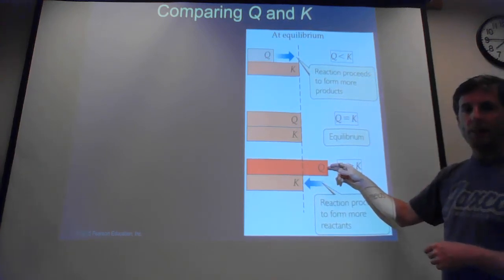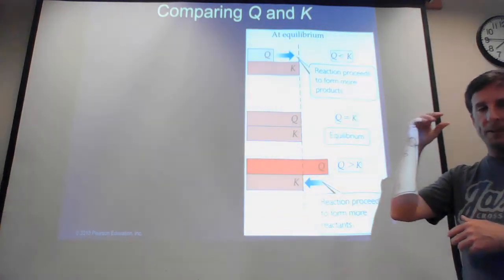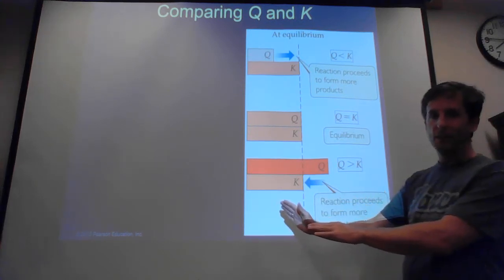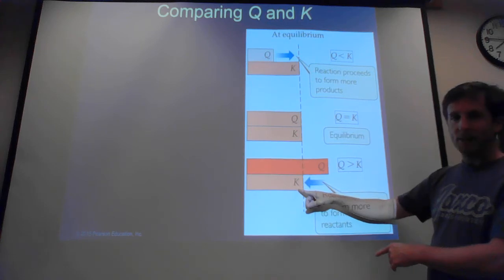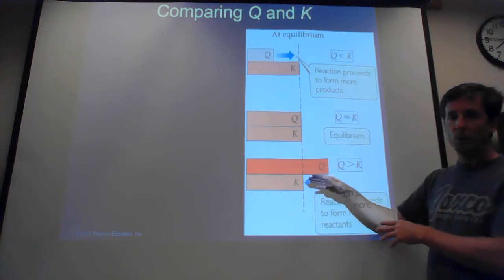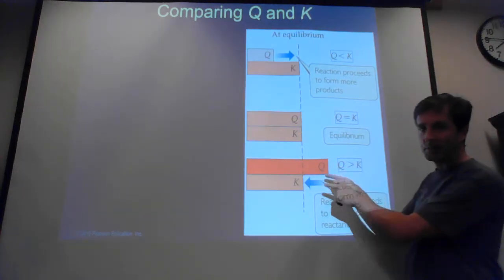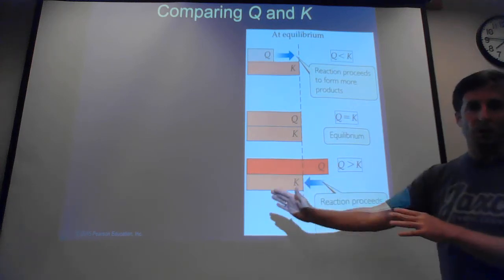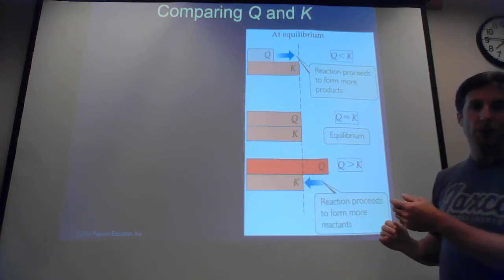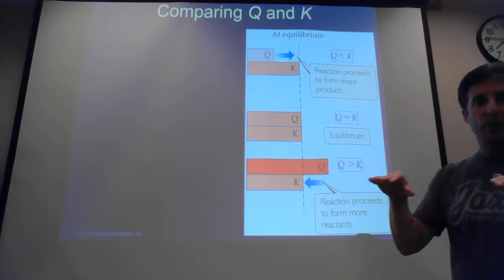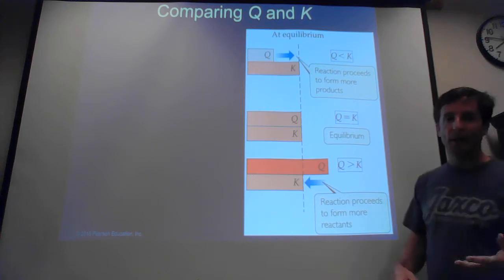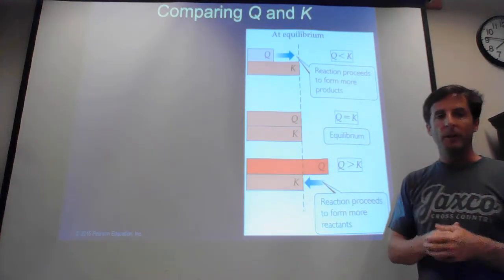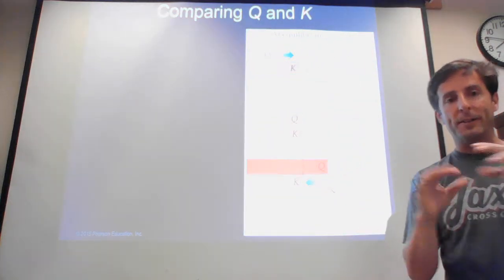If Q is greater than K, the ratio of products to reactants is too high — there are too many products. The reaction must shift back to the left, converting products into reactants, speeding up the reverse reaction and slowing the forward reaction, until the ratio reaches K and levels off. If you plug in the given values and Q equals K, then the reaction is already at equilibrium and nothing changes.